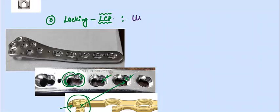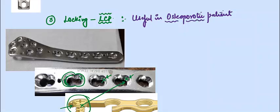Locking plates are useful in bones that are so weak they cannot hold the screw and the screw can back out. In osteoporotic patients, wherever you think the bone is weak and cannot hold the screw — where the purchase or strength of the screw inside the bone is not good — you can use a locking plate, as the screw gets fixed to the plate and not exactly to the bone.